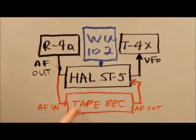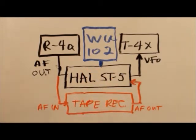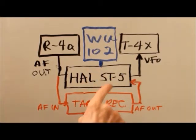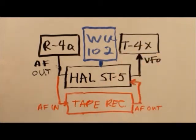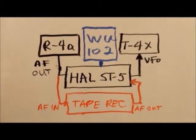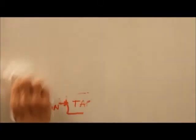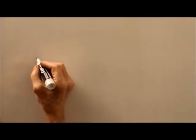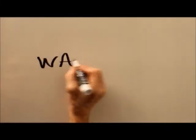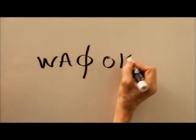And by golly, that thing worked. The audio came in, it was recorded, the audio went out into the ST5, which encoded it, and keyed that VFO for the Drake T4X. So in that way, I was able to get on Bordeaux radio teletype from my old ham radio station in Minnesota, whose call letters were WA0OKV.